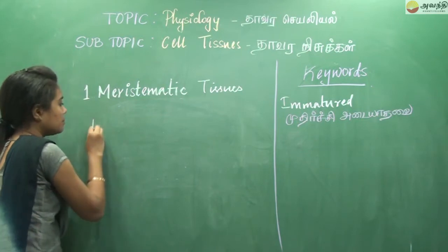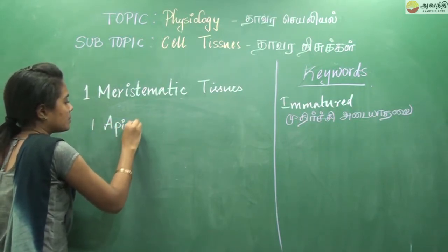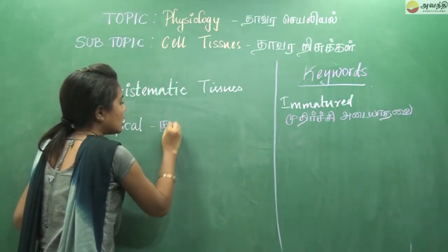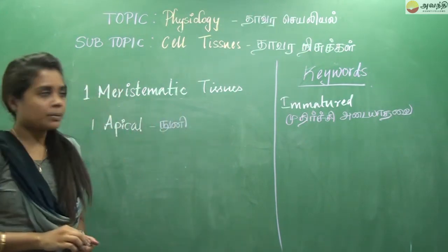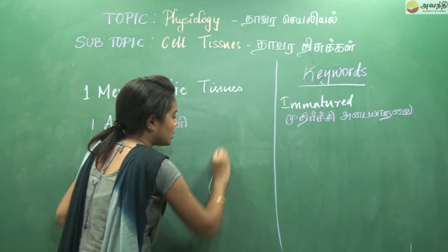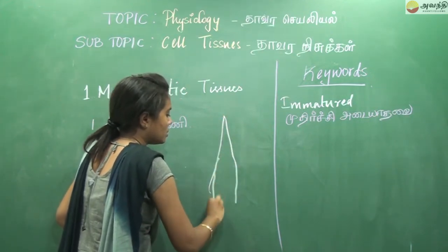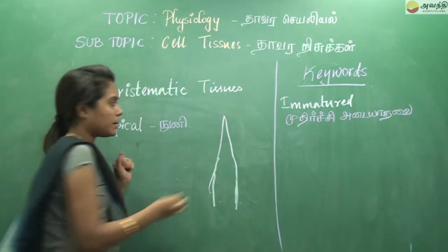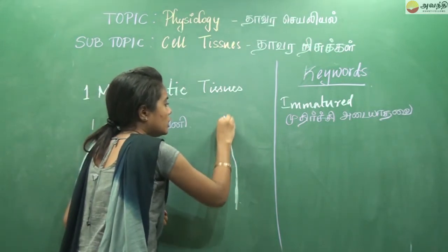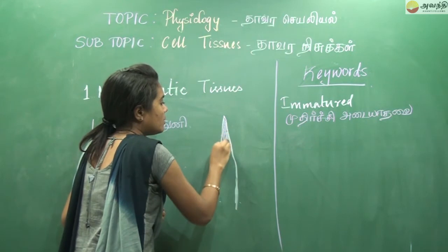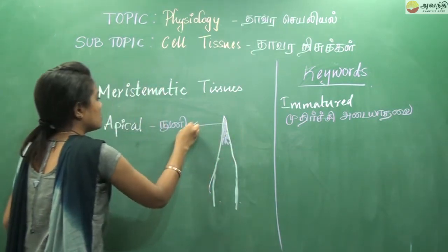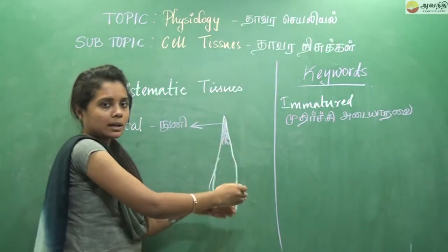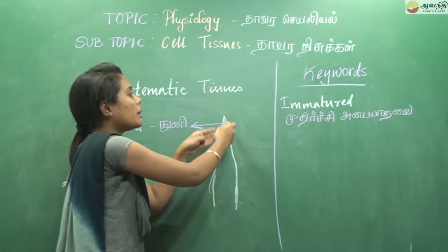The first category of meristematic tissue is apical meristem. This is the apical meristem located at the edge or tip of the plant. This is where cells split and new cells are formed. This is the main growing point of the plant.